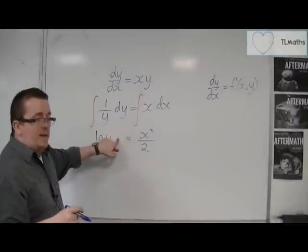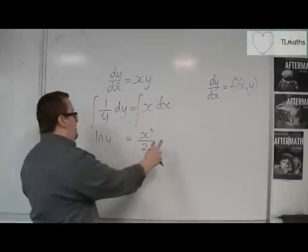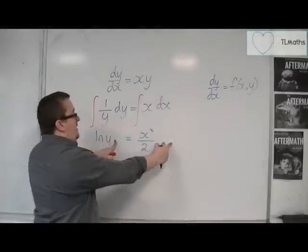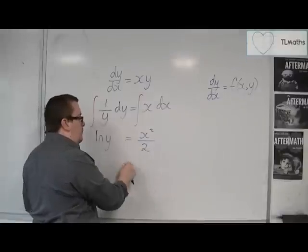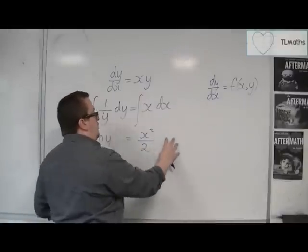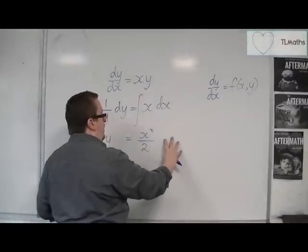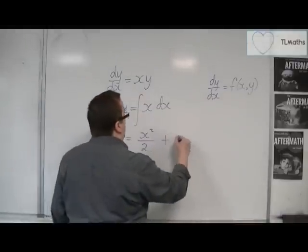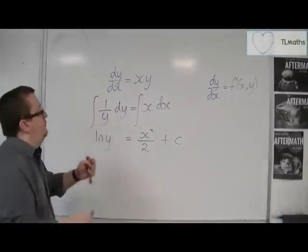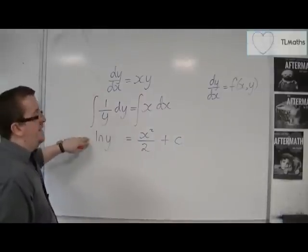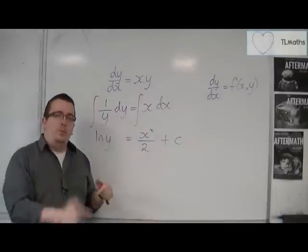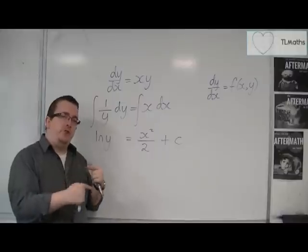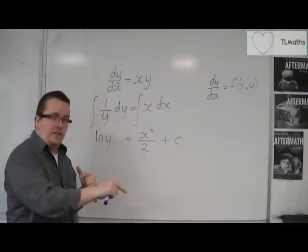Now, if I had a constant of integration there, and a constant of integration there, what I could effectively do is take that one from both sides, and just be left with a constant of integration on one side of the equation. And that's what we do. So when we are solving a differential equation like this, and we get to this stage, we traditionally write the constant of integration on the right-hand side of the equation.